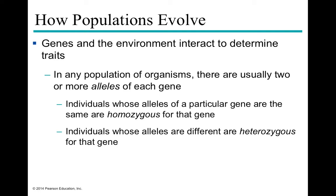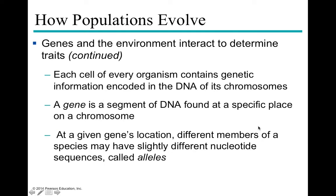If you remember our genetics lectures, you'll understand some of these terms. A location in the genome is called a locus. You have two copies of each chromosome, meaning two copies of each locus. At any particular locus you can have either the same allele or two different alleles — for example, two alleles for blue eyes makes you homozygous, while one blue and one brown eye allele makes you heterozygous for that gene.